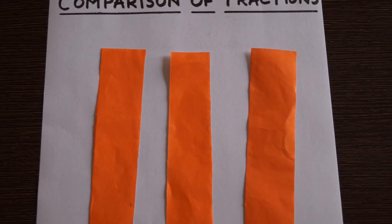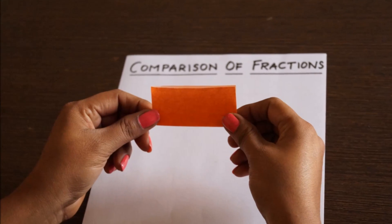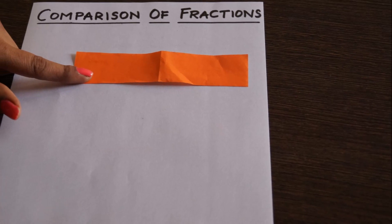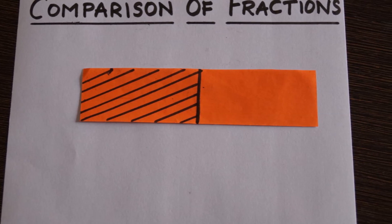Cut three rectangular strips of the same size from the origami sheet. Now, take one strip and divide it into two equal parts and shade one part.